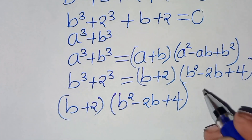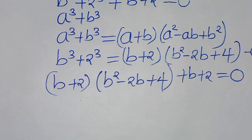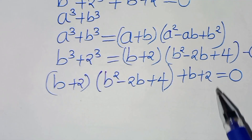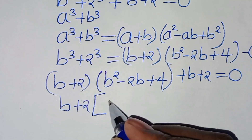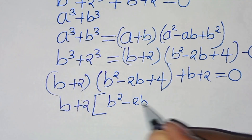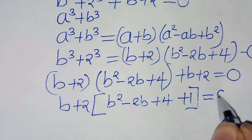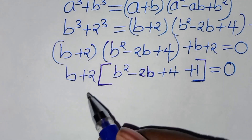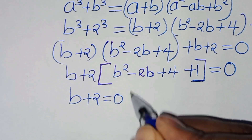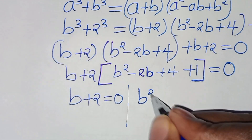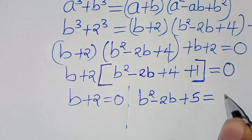Now combining with the remaining factor, we have (b + 2) times (b squared minus 2b plus 4) plus (b + 2), this is equal to 0. Since (b + 2) is common here, we can factor it out, so that (b + 2) times (b squared minus 2b plus 4 plus 1) equals 0, which gives (b + 2)(b squared minus 2b plus 5) equals 0.